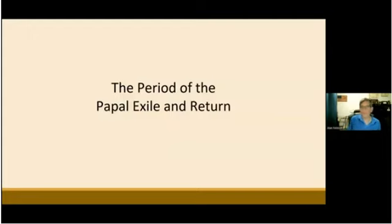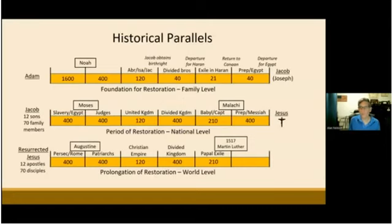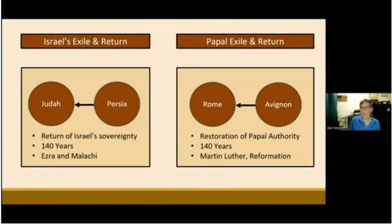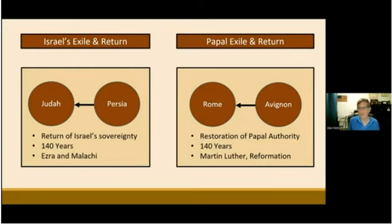The next period of the Christian era was the period of the papal exile and return. The 210-year period began in 1309 AD when Pope Clement V was forced to move the papacy from Rome to Avignon, and ended with the Protestant Reformation in 1517. Its purpose was to restore the 210-year period of Israel's exile and return — known as the Babylonian captivity — through parallel indemnity conditions. Just as the Jewish people were taken captive in Babylon, God allowed the popes to be taken into exile and suffer captivity in Avignon for 70 years beginning in 1309. After the pope returned to Rome, there was a period of approximately 140 years in which the Christian world went through the Great Schism, the Conciliar movement, and the restoration of papal authority in the Roman Church, up to the eve of the Protestant Reformation spearheaded by Martin Luther in 1517.